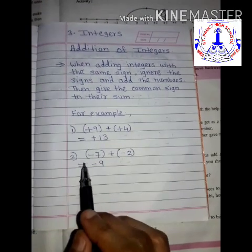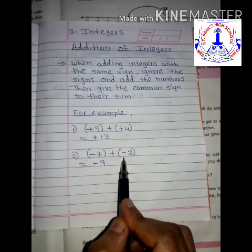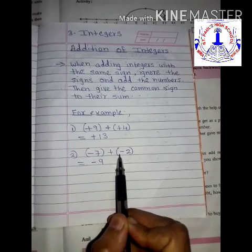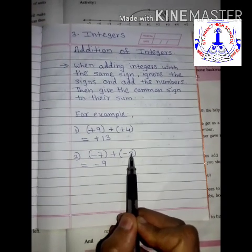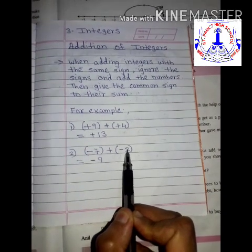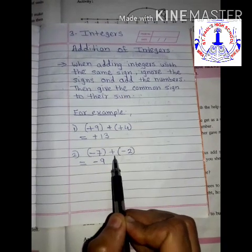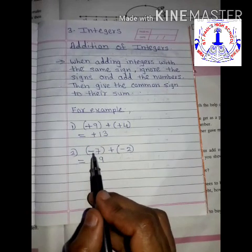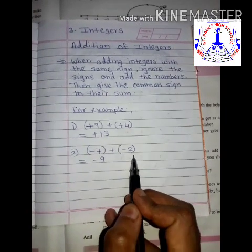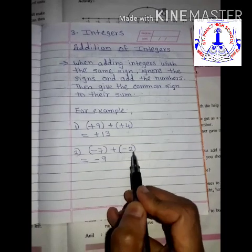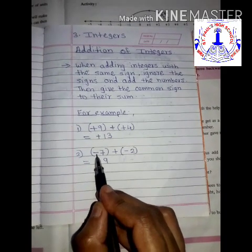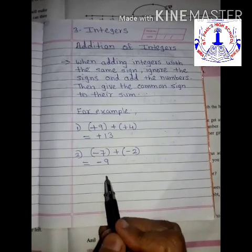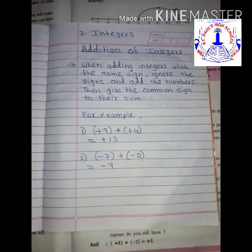Next example: minus 7 and minus 2. Here 7 has a minus sign and 2 has a minus sign, so both integers have the same sign. As per the rule, first add the numbers: 7 plus 2 is 9. Then give the common sign, which is minus. So the answer is minus 9.